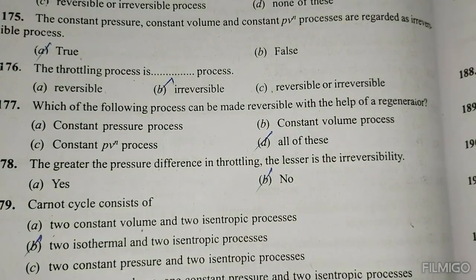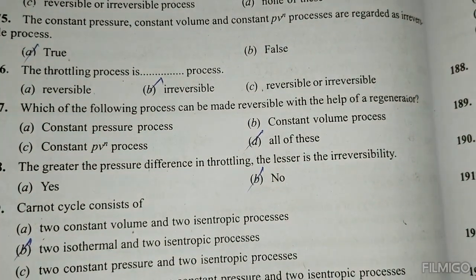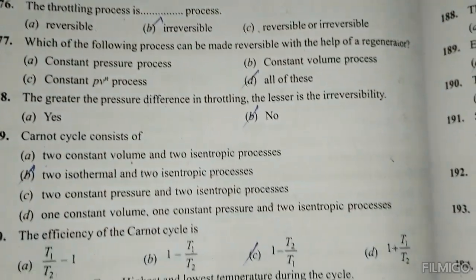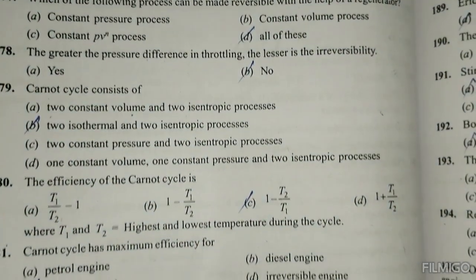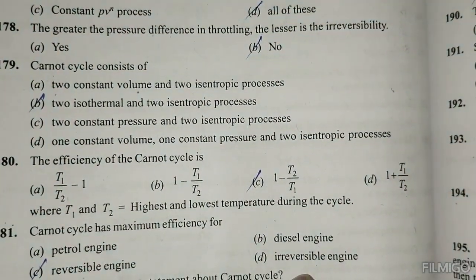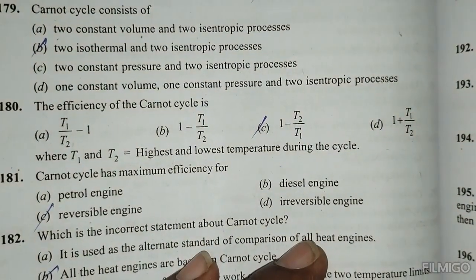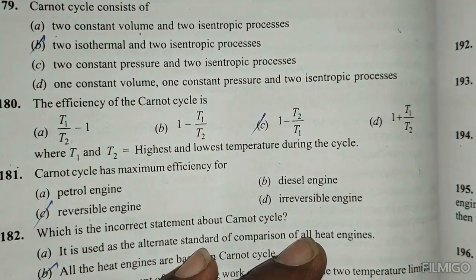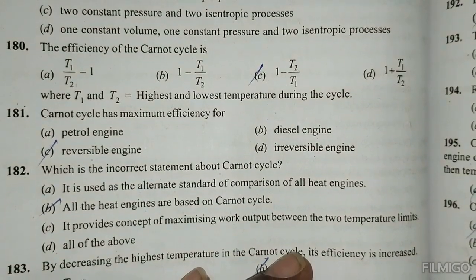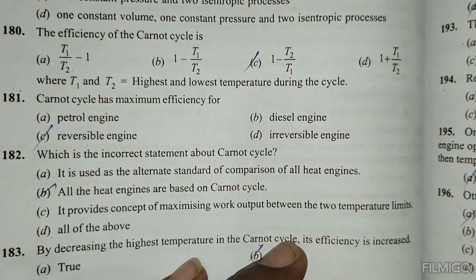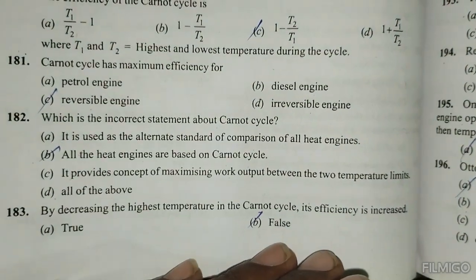The greater the pressure difference in throttling, the lesser is the irreversibility. The Carnot cycle consists of 2 isothermal and 2 isentropic processes. The efficiency of the Carnot cycle is 1 - T2/T1. The Carnot cycle has maximum efficiency for a reversible engine. The incorrect statement about the Carnot cycle is that all heat engines are based on the Carnot cycle.